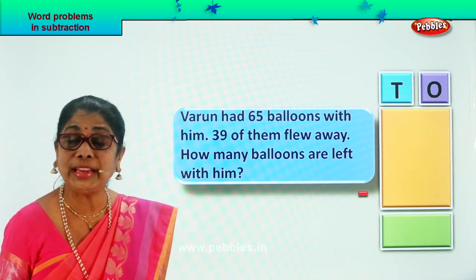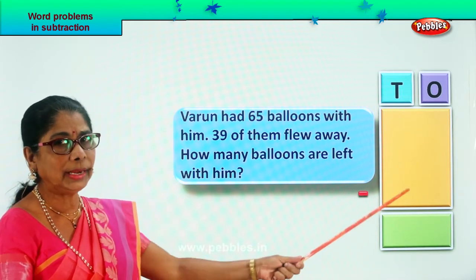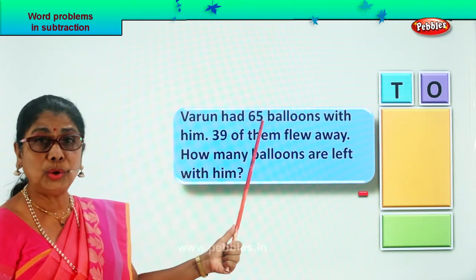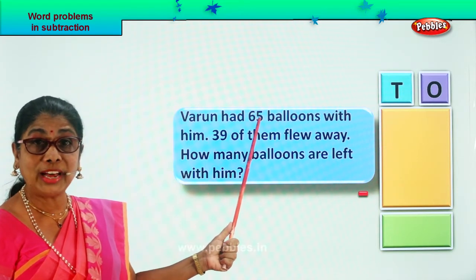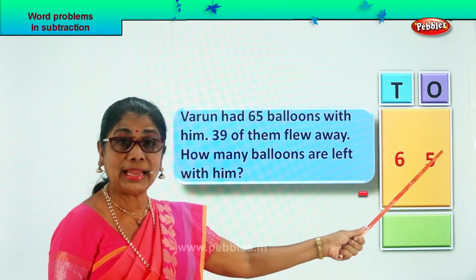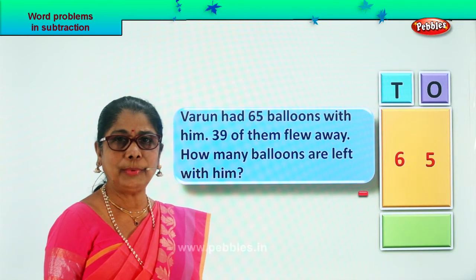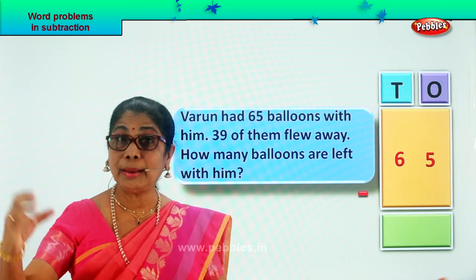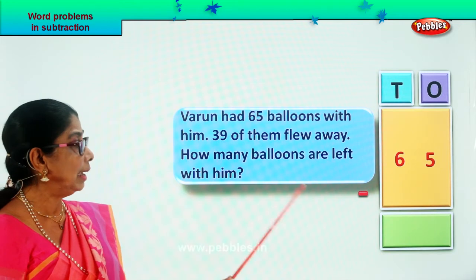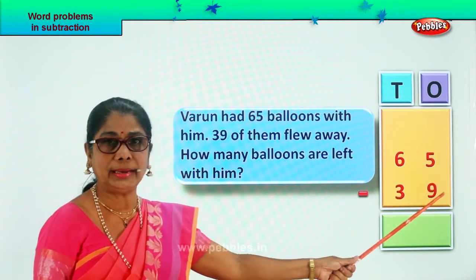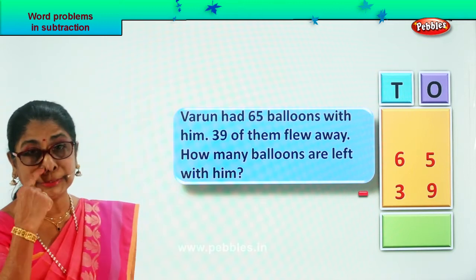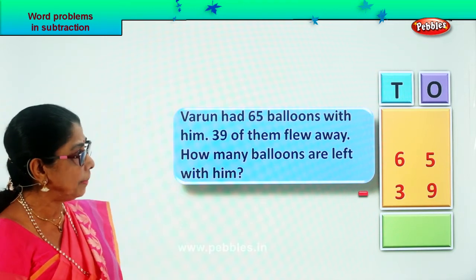That's what we have to find out. Let's put the numbers in the box here. Number of balloons Varun had is 65 — that's 6 tens, 5 ones. The number that flew away: minus 39 — 3 tens, 9 ones. So we have arranged the numbers now. Let's work out the sum.